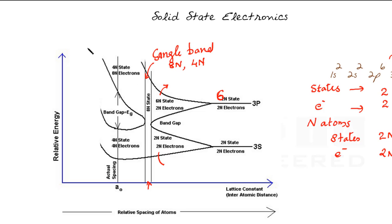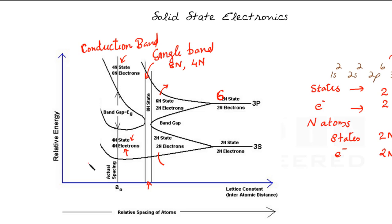After that, as we reduce the distance further, the energy levels again split. This time we have an upper band with 4n states and zero electrons, and a lower band with 4n states and all 4n electrons occupying it. The upper band we call the conduction band and the lower band we call the valence band.